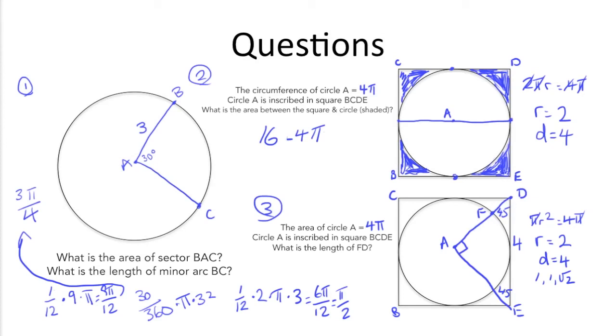So if we know that the legs are generally represented by 1, we can set 1 over x equals, we know the hypotenuse is always root 2, and in this case it's 4. All we need to do is cross-multiply to get the length of one of the legs.